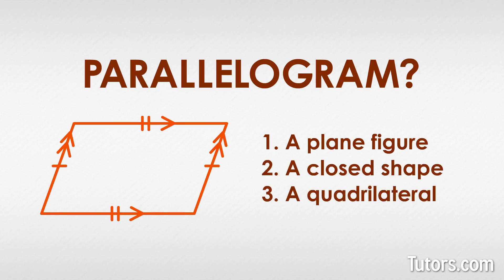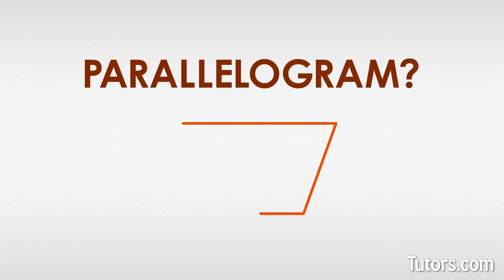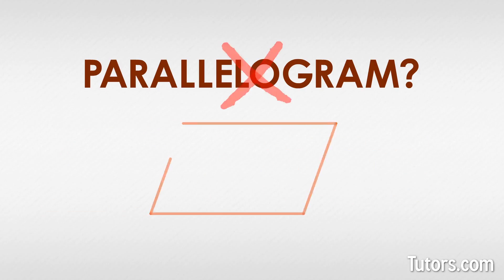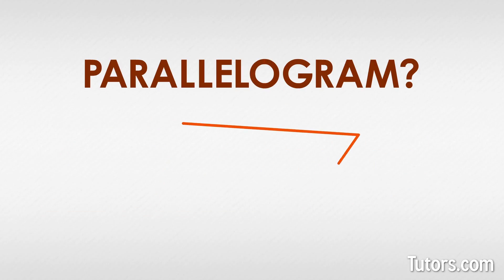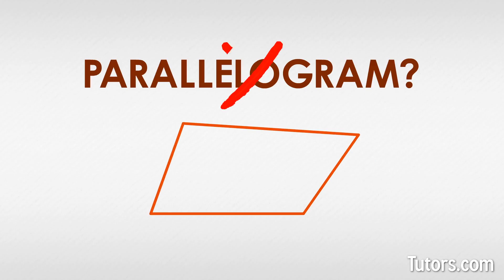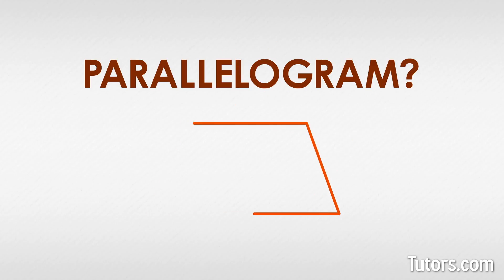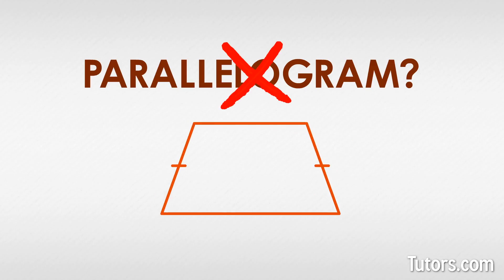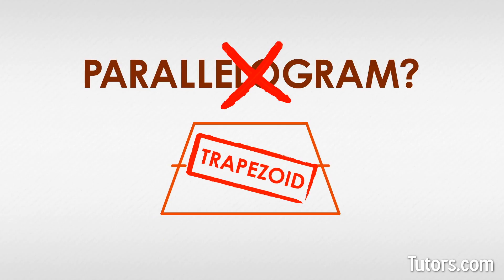You can have almost all of these qualities and still not have a parallelogram. If the four sides do not connect at their endpoints, you do not have a closed shape — no parallelogram. If one side is longer than its opposite side, you do not have parallel sides — no parallelogram. If only one set of opposite sides are congruent, you do not have a parallelogram.